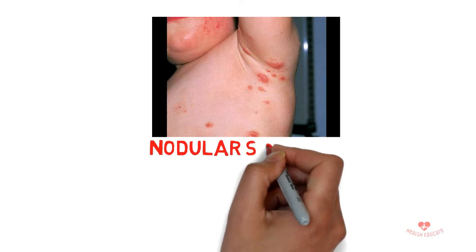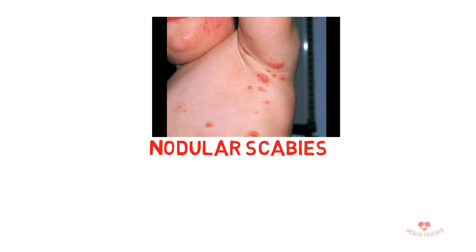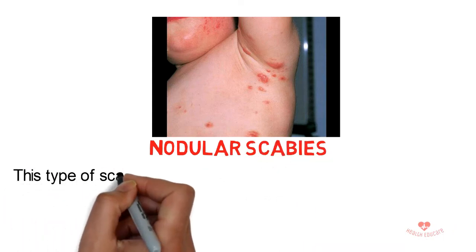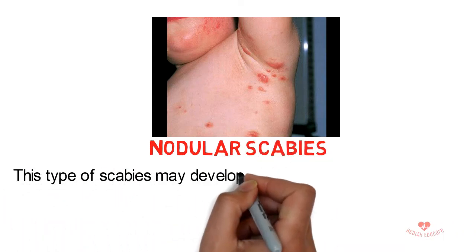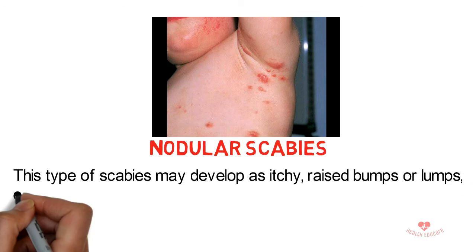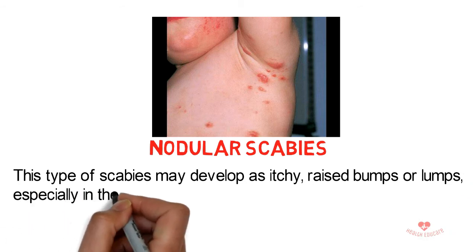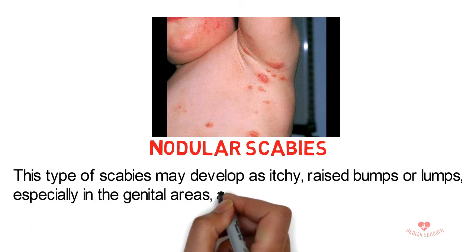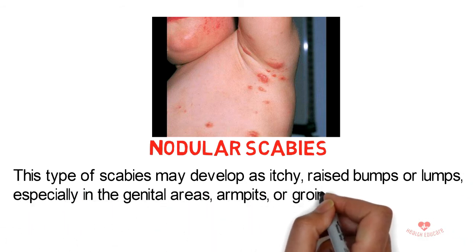2. Nodular scabies — this type of scabies may develop as itchy, raised bumps or lumps, especially in the genital areas, armpits, or groin.